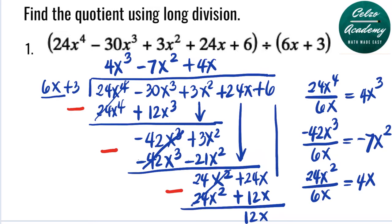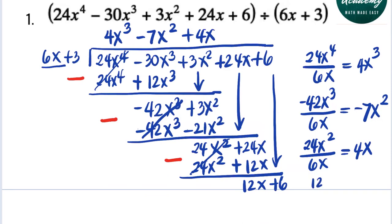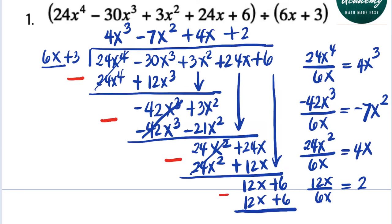We bring down the last term, 6. Now we divide 12x by 6x: 12 divided by 6 is 2, and the x cancels out, so the last term of the answer is 2. We multiply 6x plus 3 by 2: 6x times 2 is 12x, and 3 times 2 is 6. Subtracting: 12x minus 12x is 0, and 6 minus 6 is 0. So the final answer is 4x cubed minus 7x squared plus 4x plus 2.